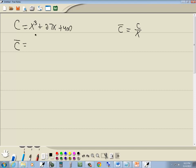So let's find that. We're going to take this and put it over x. So we've got x to the third plus 27x plus 400 all over x. Now since I've got a single term down in the denominator, I can split them into separate fractions. So we've got x to the third over x plus 27x over x plus 400 over x.